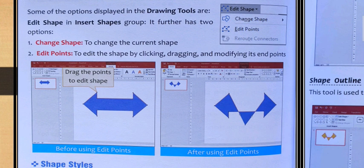Here you can see in the first picture the original shape is here. In the second picture it will be modified. You can modify by dragging and using Edit Points. You can edit the points to modify the shape.